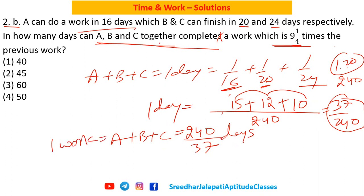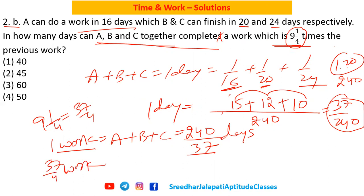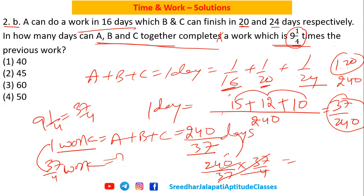But here you are asked to find how many days they take to complete a work which is 9¼ times the original work. 9¼ as an improper fraction is 37/4. For one work they take 240/37 days, so for 37/4 times the work, since work is proportional to time taken, it is 240/37 multiplied by 37/4. The 37s cancel, giving 240/4 = 60.